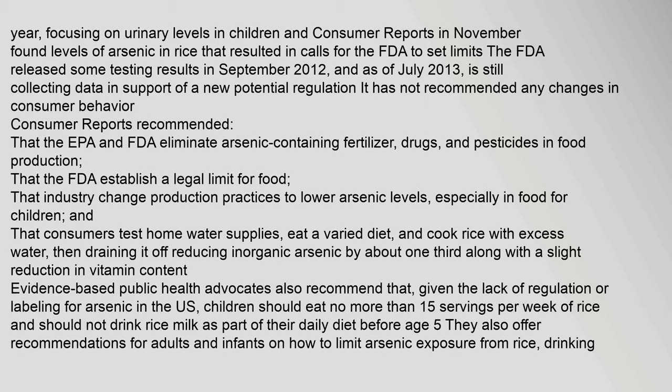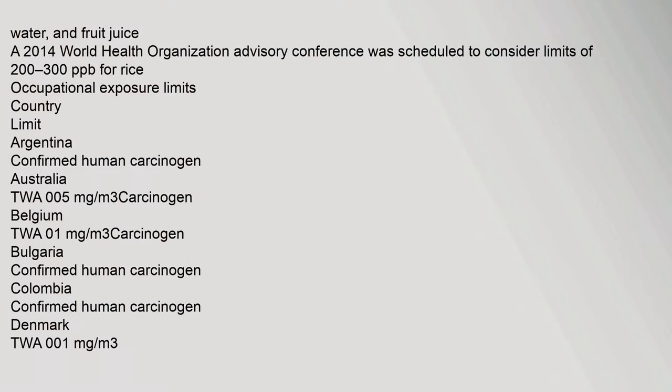Concern about arsenic in rice in Bangladesh was raised in 2002, but at the time only Australia had a legal limit for food — one milligram per kilogram. In 2011, the People's Republic of China set a food standard of 150 ppb for arsenic. In 2012, testing by researchers at Dartmouth College and by Consumer Reports found levels of arsenic in rice that resulted in calls for the FDA to set limits. Consumer Reports recommended that the EPA and FDA eliminate arsenic-containing fertilizer, drugs, and pesticides in food production, that industry lower arsenic levels especially in food for children, and that consumers test home water supplies, eat a varied diet, and cook rice with excess water. A 2014 WHO Advisory Conference was scheduled to consider limits of 200–300 ppb for rice.